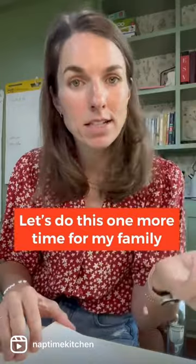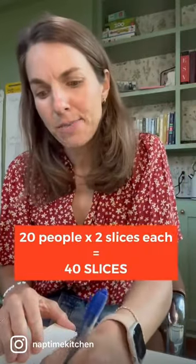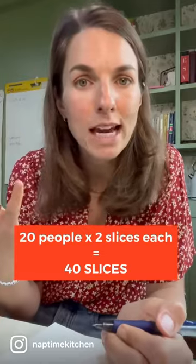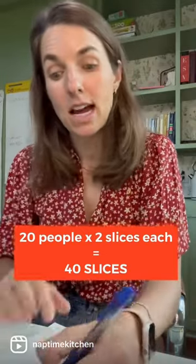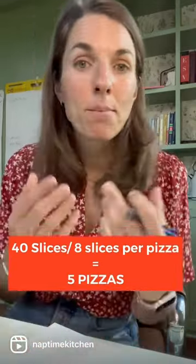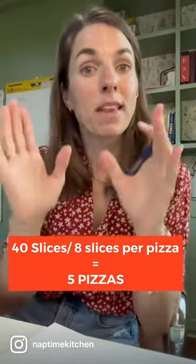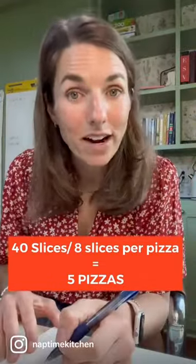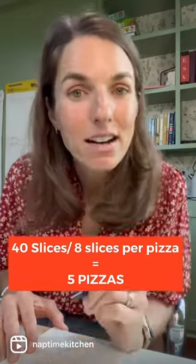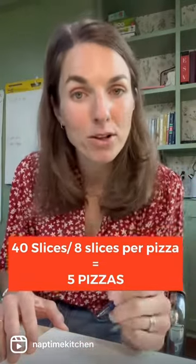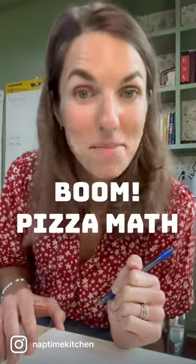Let's say I'm having dinner with my family and there will be 20 of us. I'm going to average two slices per person — that's 40 slices. I'm going to divide that by eight, since the average pizza has eight slices. You could always call your pizza place, but they normally have eight slices. 40 divided by eight is five. We need five pizzas if every person is going to have two slices. That's pizza math.